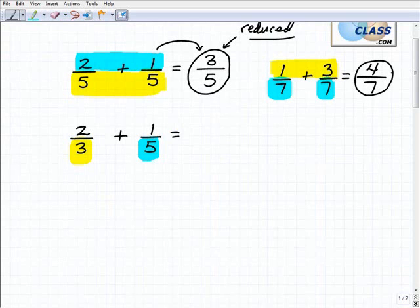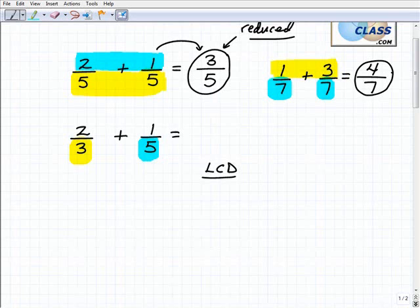So in order to do this, you have to understand this concept about the LCD, the lowest common denominator. Basically, the lowest common denominator is the lowest number that both these two numbers, 3 and 5, can divide into evenly - in other words, with no remainder. So what's the lowest common denominator? You guessed it, it is 15.